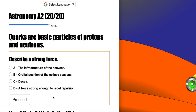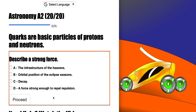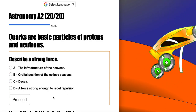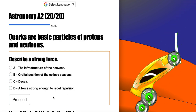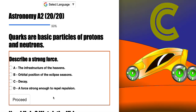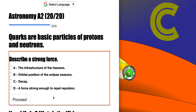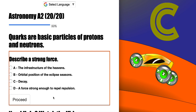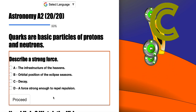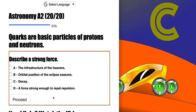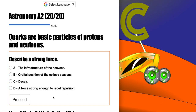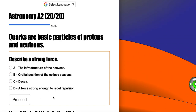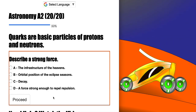Quarks are basic particles of protons and neutrons. First you have the atom. Within the atom you have a nucleus. The nucleus is going to contain protons and neutrons. And then within those protons and those neutrons you're going to have an even smaller particle called quarks.